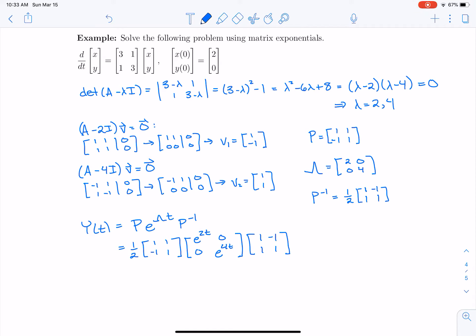So Y(t) is going to be P e^(Λt) P^(-1). I forgot Y₀. So we're going to multiply that by [2, 0]. Okay, now this problem that's left is just matrix multiplication. Okay, so I'm going to take the 1/2, leave it there. I'm going to multiply the first two matrices together. When I do that, I get [e^(2t), -e^(4t); e^(2t), e^(4t)].